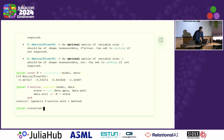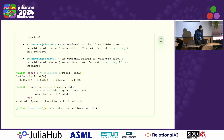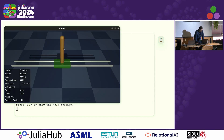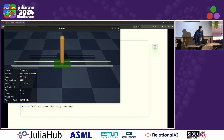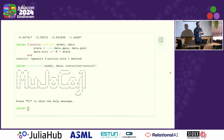To test the controller, we call visualize! again with model, data, and pass in the controller function we've defined. The mode has changed to 'controller'. Clicking play does nothing on its own, but when we add a force, the cart balances itself. We hope you can use the REPL to create and iteratively develop controllers, tweak parameters, and directly see the results.